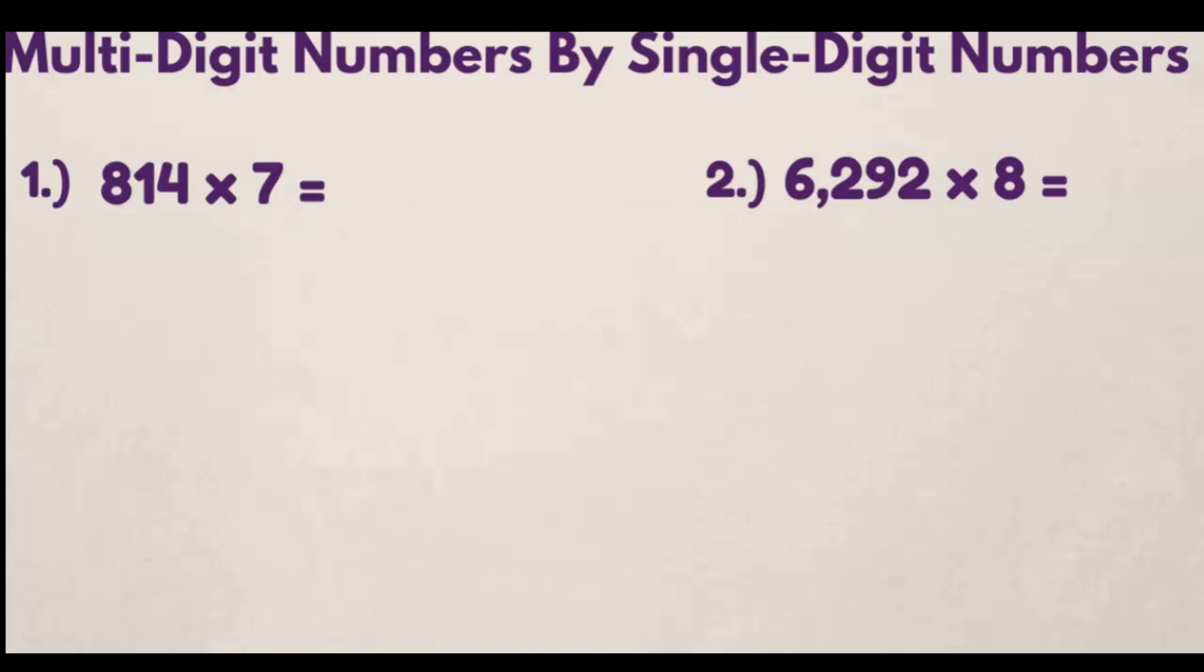So let's walk through the first example. What is 814 times 7? Well, let's set it up first as 814 times 7.